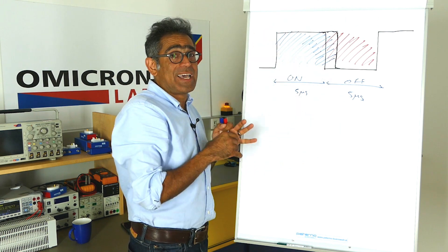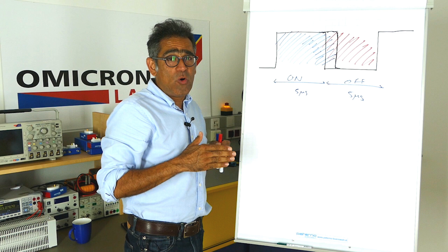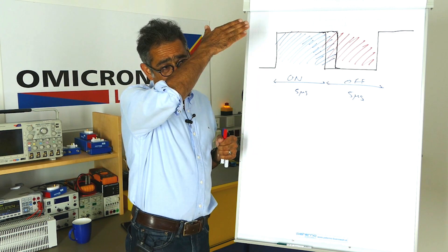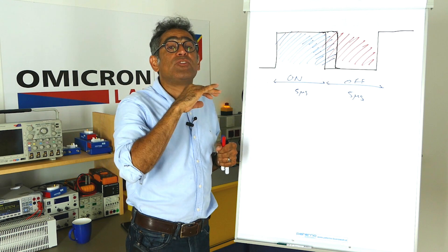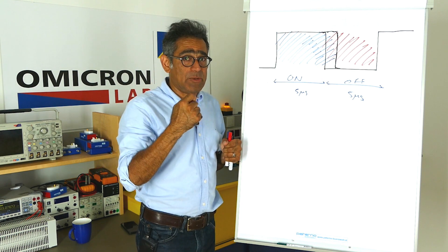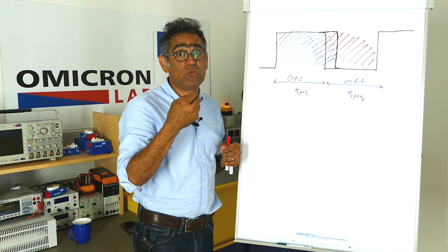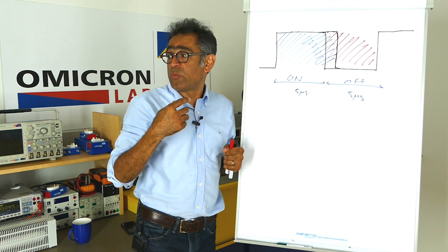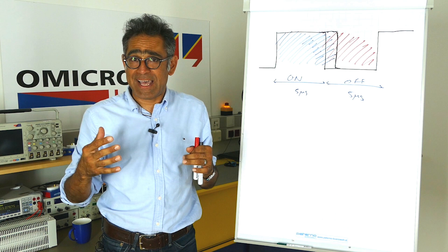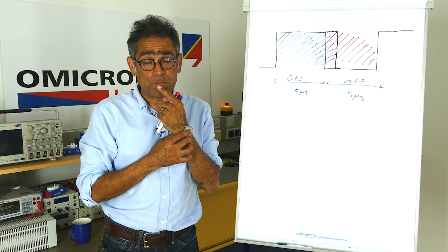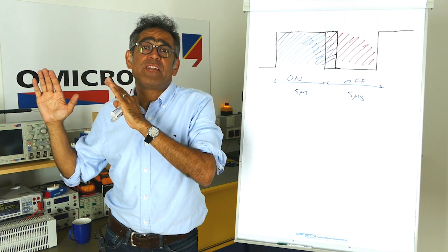Now we can look at that in the frequency domain and see the impact of a right-hand plane zero. We know that a left-hand plane zero flattens the curve, the gain curve, by 20 dB and you get a phase rise. But a right-hand plane zero still flattens the gain curve, but you get a phase fall. So you lose phase, and you lose phase much. We are now going to go to the lab and look at this on a flyback converter which does have a right-hand plane zero and see how this manifests itself in the frequency domain.